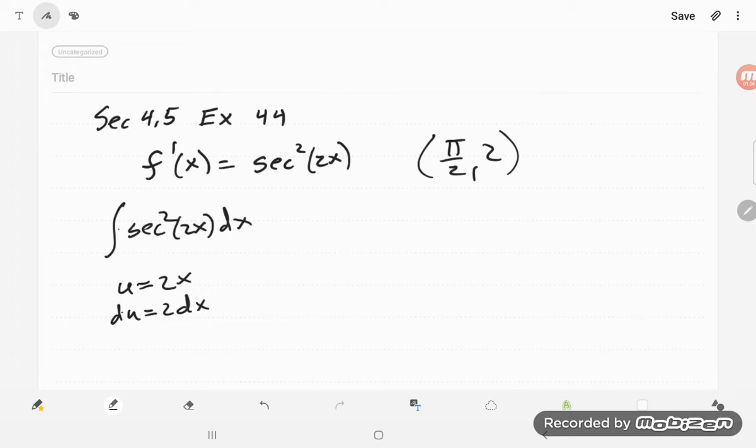Well, I don't have 2dx, so let's put that in: one half times 2 secant squared of 2x dx. Now we have a 2dx in there, and so that's one half the antiderivative of secant squared of u du.